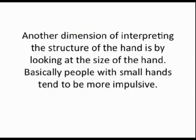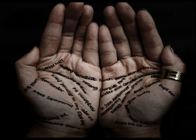Secondly, you can look at the size of the hands. Looking at the size of the hand is another dimension of interpreting the hand's structure. A basic note here is that people with small hands tend to be a little bit more impulsive. The last thing we'll talk about today is thumb flexibility. You can also learn a lot by observing the flexibility of the thumb. A highly flexible thumb will show that you are very accommodating and adaptive, while a rigid thumb will show that one is pretty obstinate.